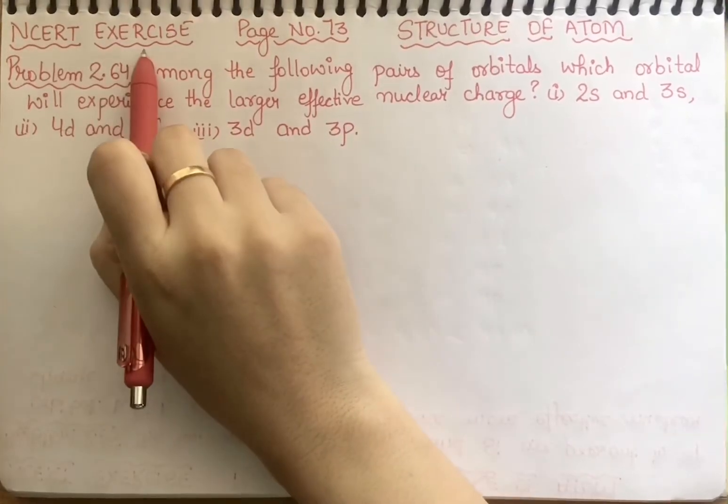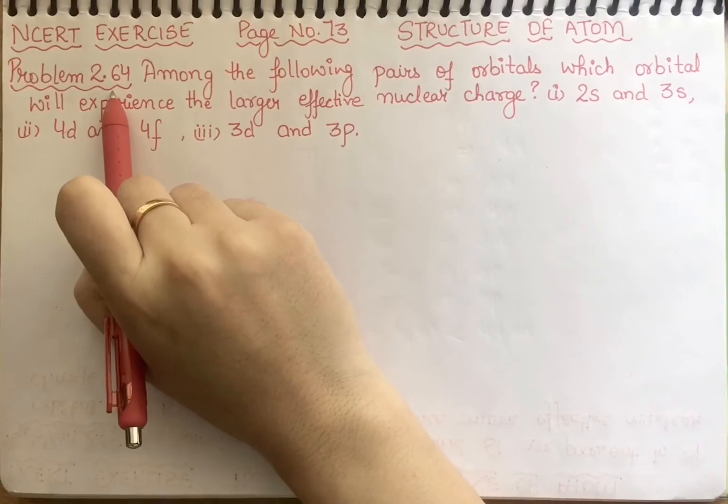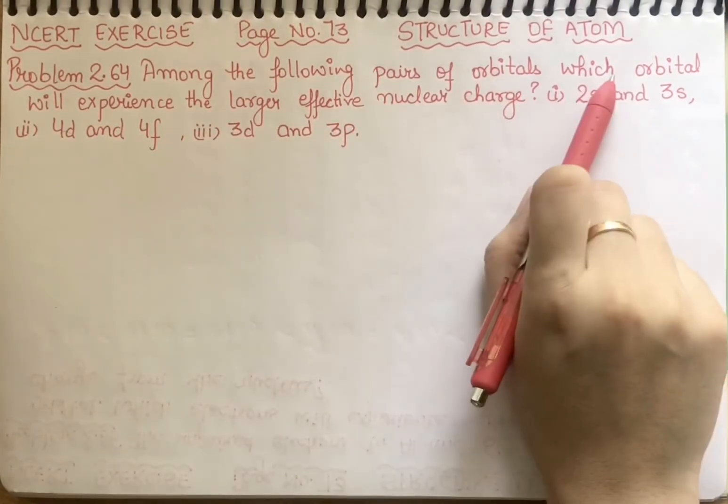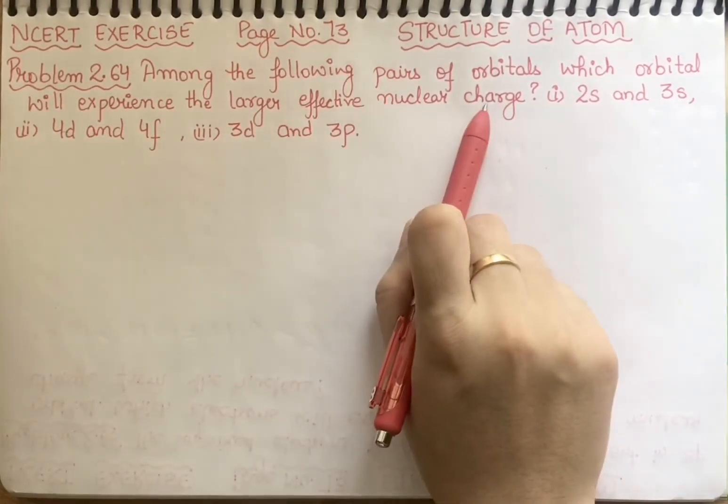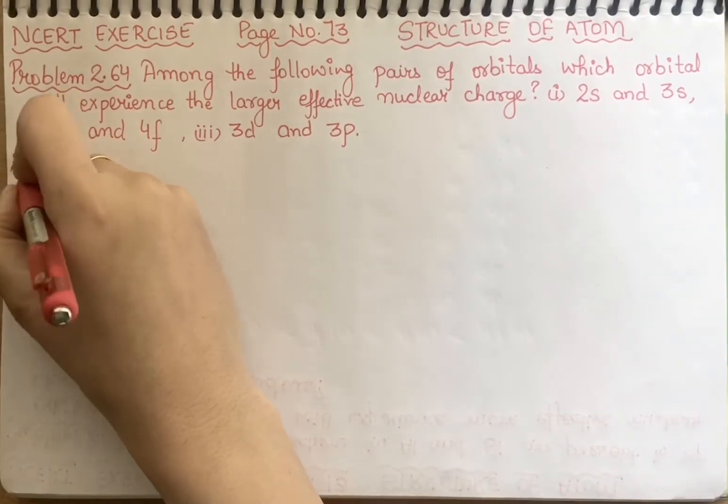Student NCERT exercise page number 73. Problem number 2.64: Among the following pairs of orbitals, which orbital will experience larger effective nuclear charge? You have some set of orbitals.